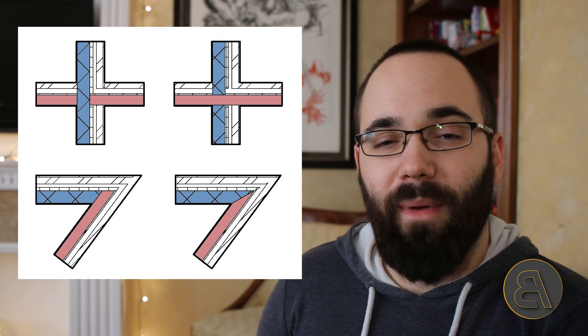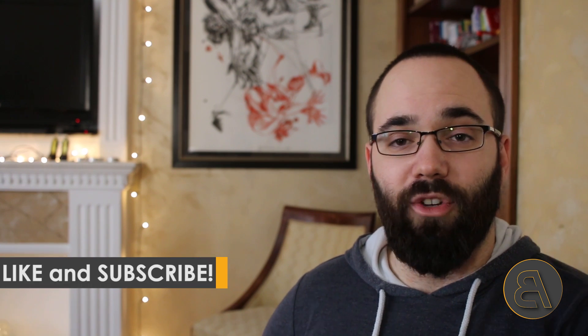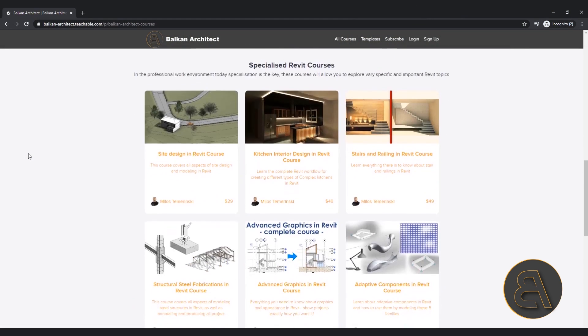What's going on guys, BalkanArchitect here. In today's video we're going to be talking about wall joints in Revit. If you're a beginner this is probably quite annoying — Revit doesn't really allow you, or at least it doesn't look like it's going to allow you, to modify the join between two walls. When you have two walls with different structures and different layers, it's really difficult to get Revit to do exactly what you want. I got the idea for this tutorial from one of my subscribers who was having trouble with wall layers.